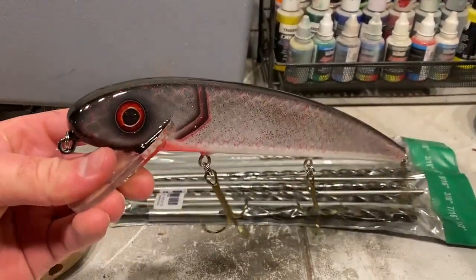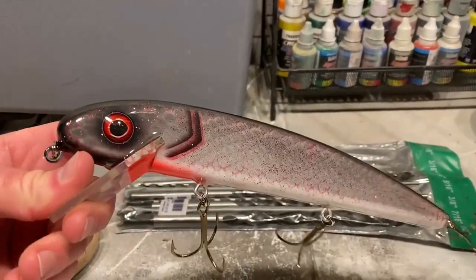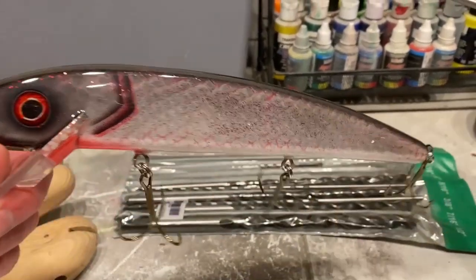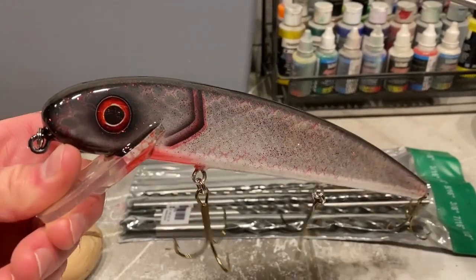All right guys, this is the 10-inch Jake that we painted up here. And this has two layers of epoxy clear coat on it. I put some 5-ought Mustad hooks on it with some size 5 split rings.